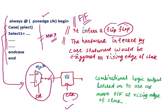So positive edge of clock — this is a flip-flop. When positive edge of clock comes, the output of MUX is propagated to the output of the flip-flop. This is a combinational logic, and this logic is latched on to this flip-flop.